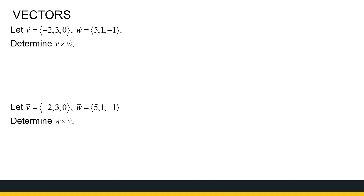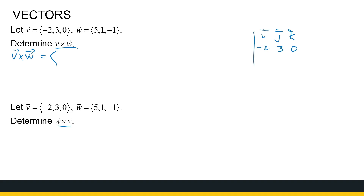Here we've got a couple of vectors V and W. We're first finding V cross W, then for the same vectors we'll find W cross V, to see whether the cross product is a commutative operation. For V cross W, we write I, J, K, then the components of V: minus 2, 3, 0, and W: 5, 1, minus 1.